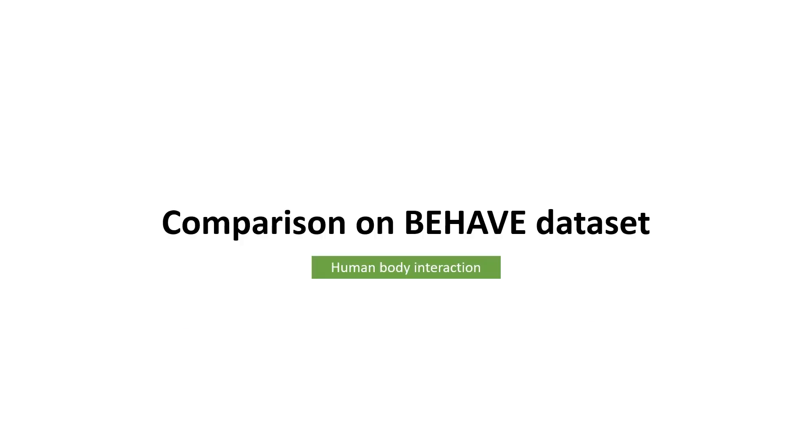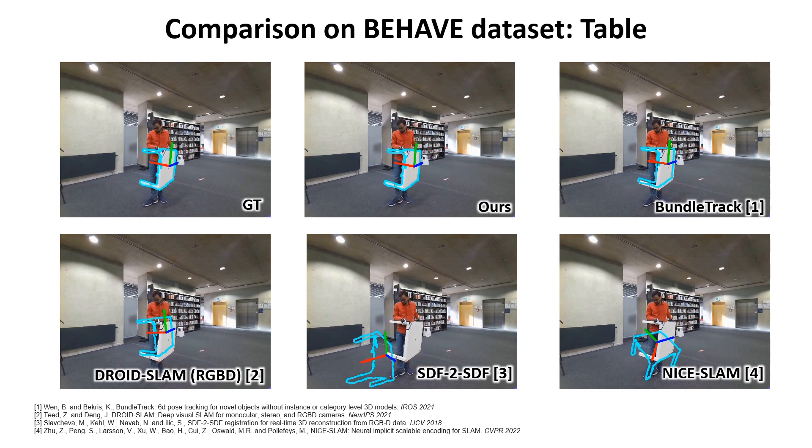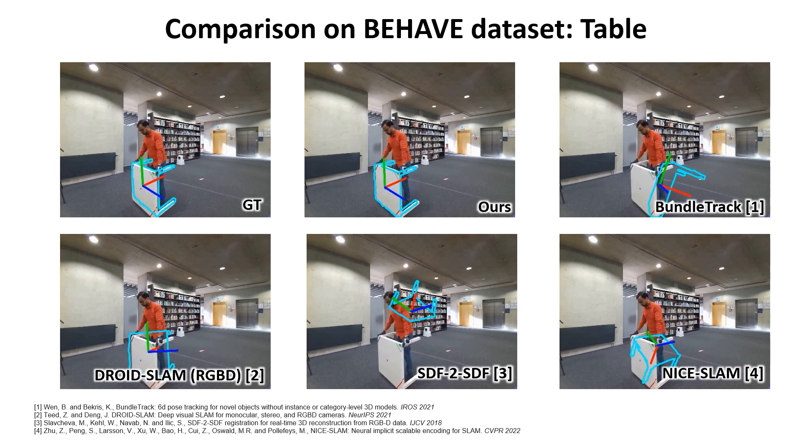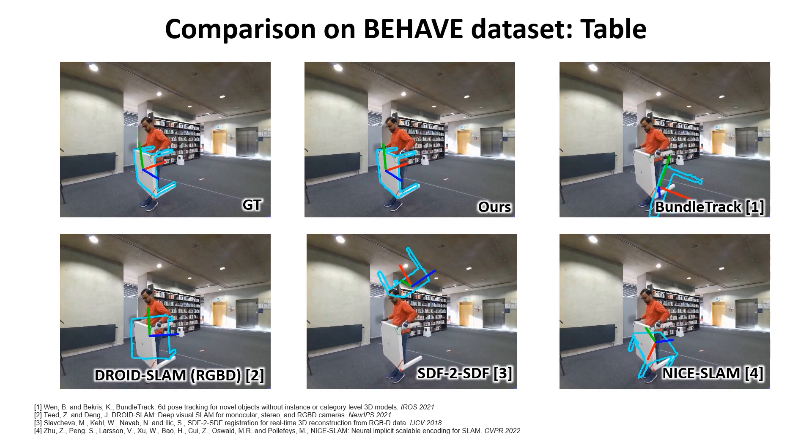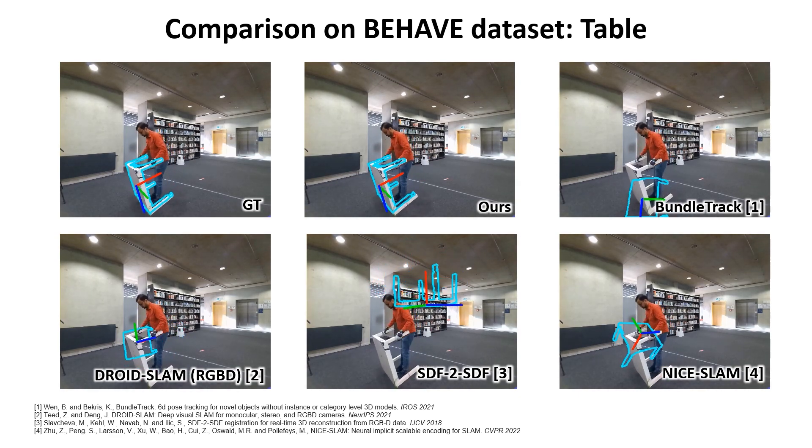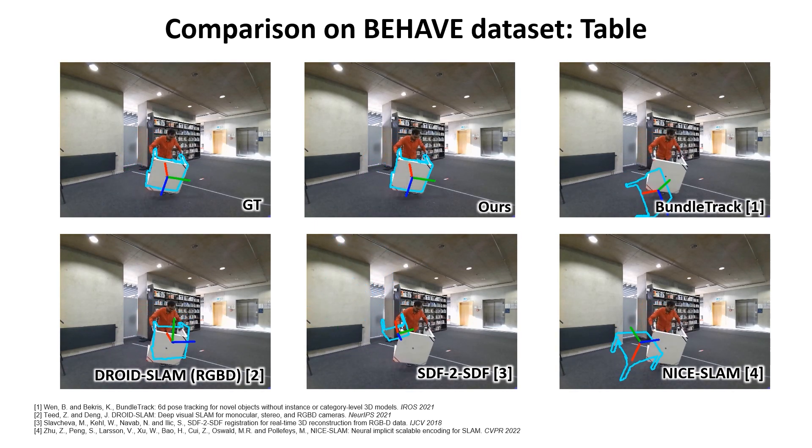Now let's take a look at the results. Behave dataset is a human-object interaction dataset. We only use one camera view for object tracking and reconstruction. Since the videos are recorded with a Kinect camera at a far distance, the depth point clouds are usually noisy. In the video, there are large motions caused by human swinging the object. The table object is also textureless and has thin structures.